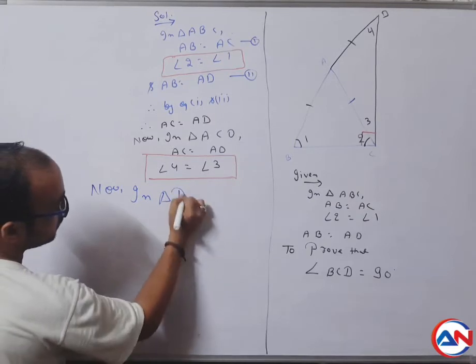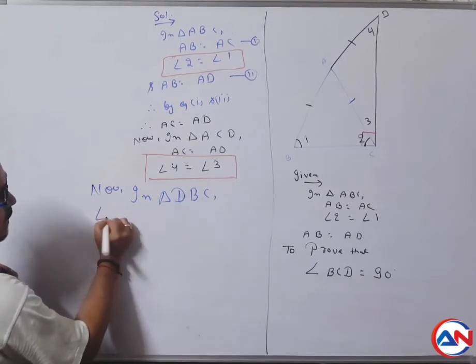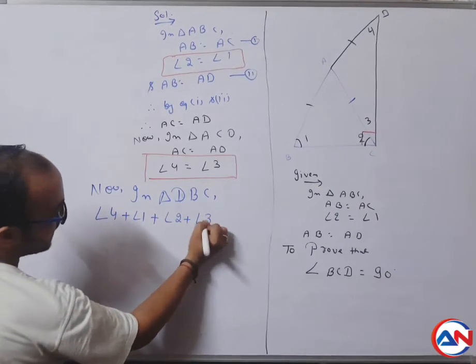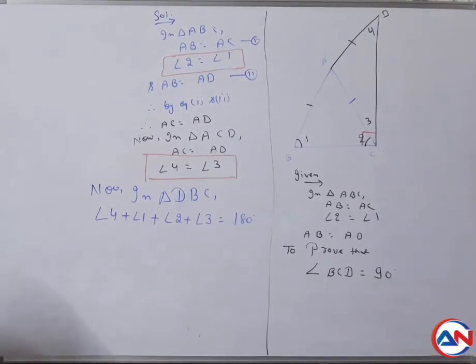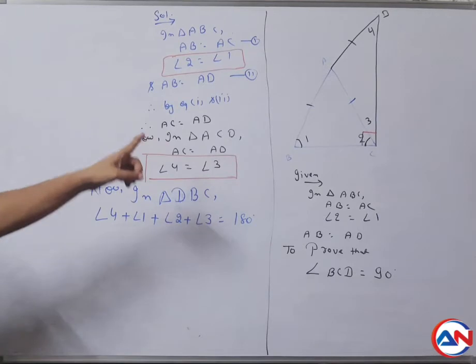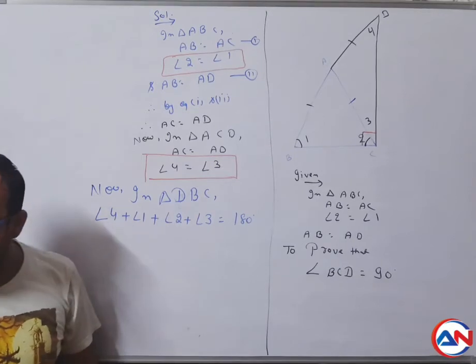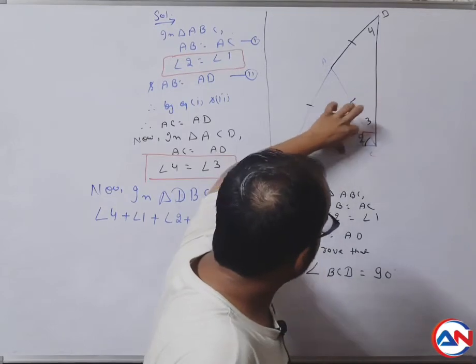Now in triangle ADBC, angle four plus angle one plus angle two plus angle three equals to 180 degrees. In triangle ADBC, the sum of all angles will be 180 degrees. Therefore, angle number four plus angle number one plus this one, it means two plus three, is equal to 180 degrees.